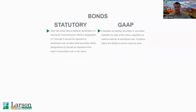For bonds, traditionally under GAAP, they can either be classified as trading, available for sale, or held to maturity. Trading and available for sale are recognized at fair value, while held to maturity are classified at amortized cost.